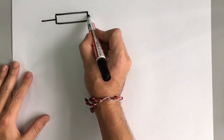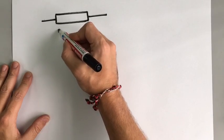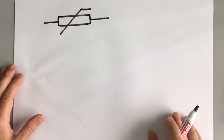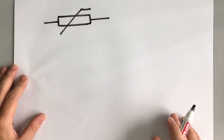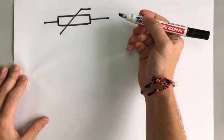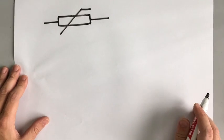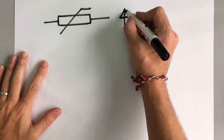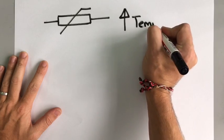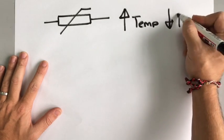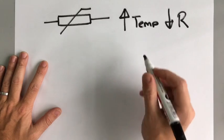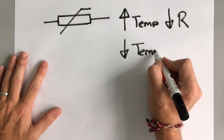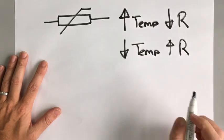A thermistor is a resistor, but the special thing about the thermistor is that it changes its resistance depending on the temperature. So if the temperature goes up, if it is in a hotter room, then the resistance decreases. Higher temperature, lower resistance. And the same happens the other way around. A lower temperature means higher resistance.